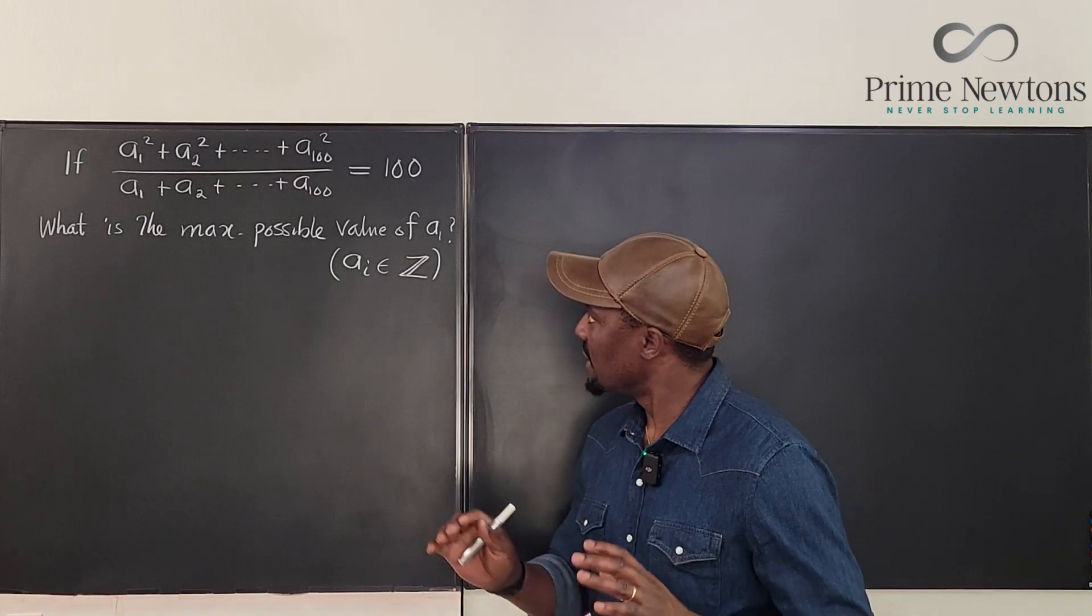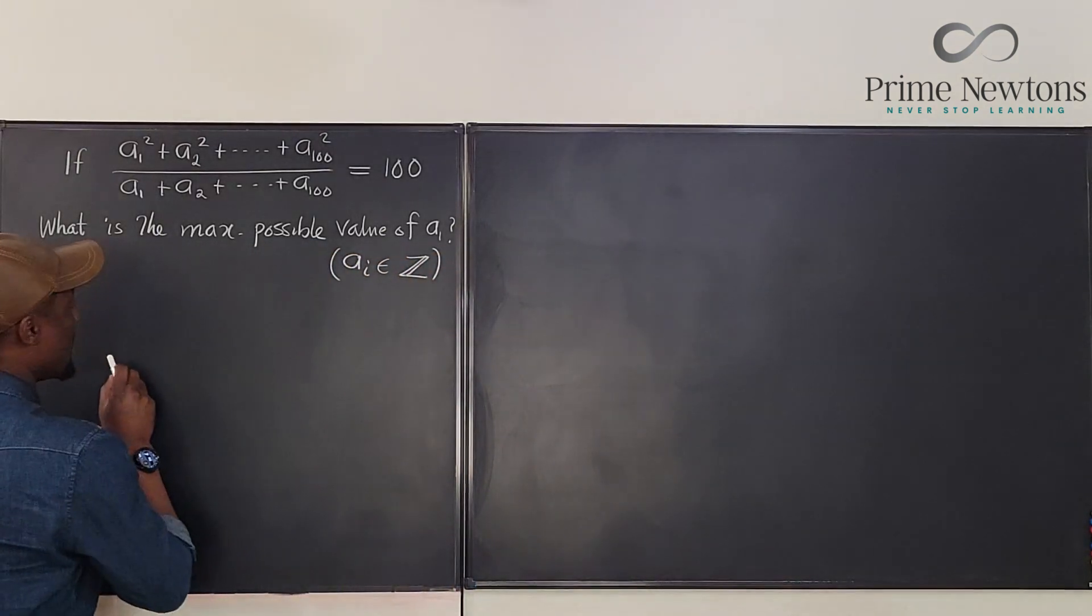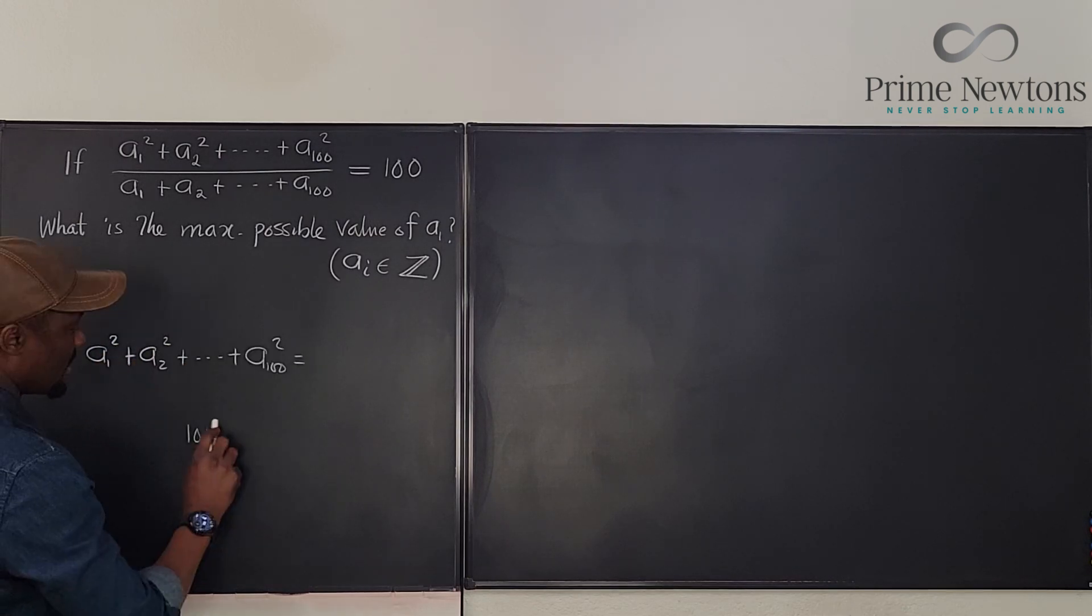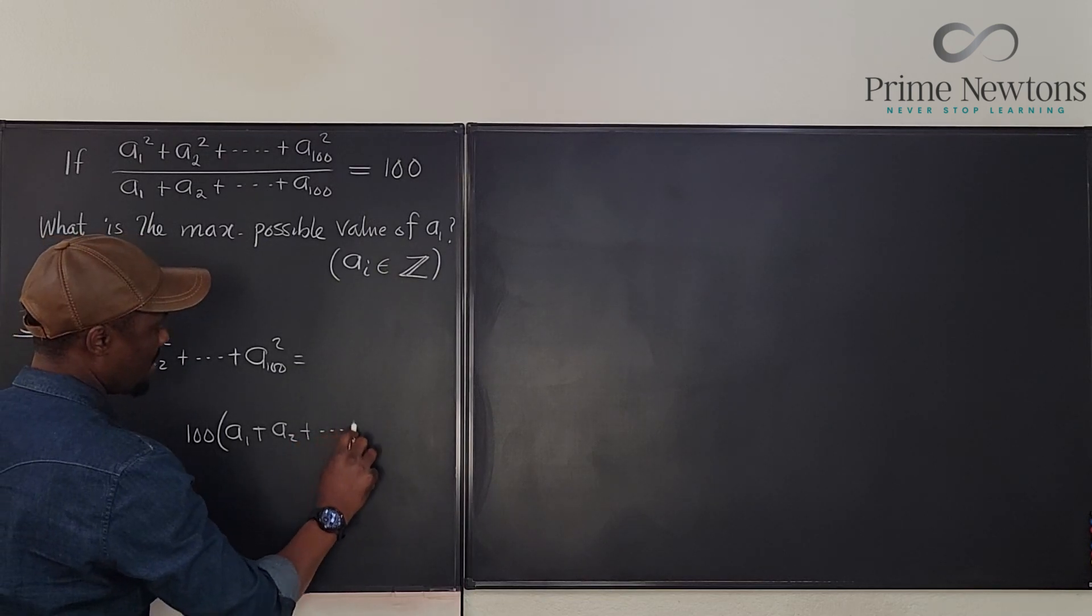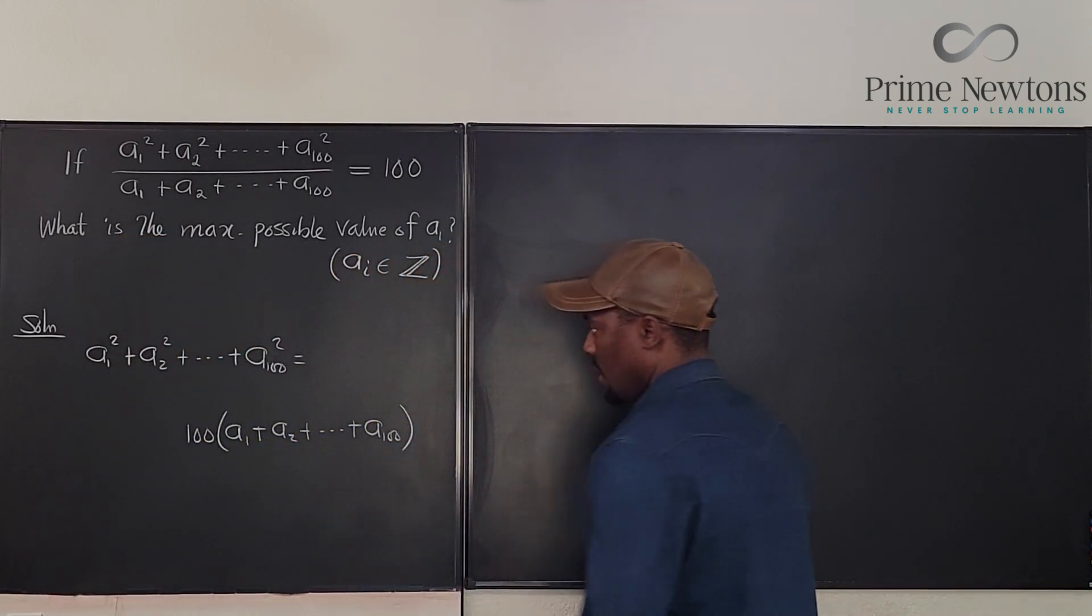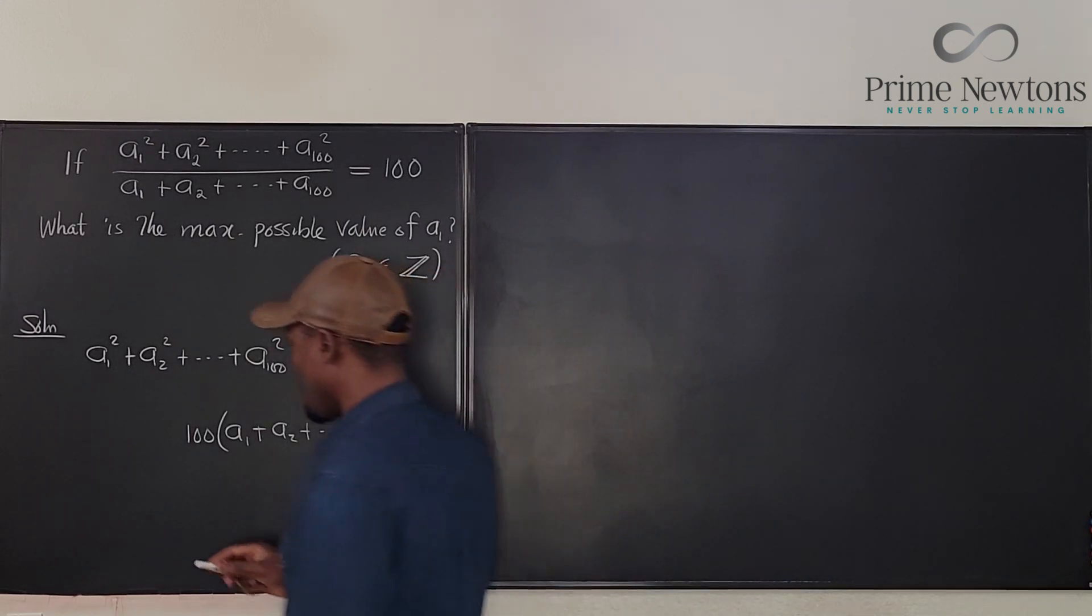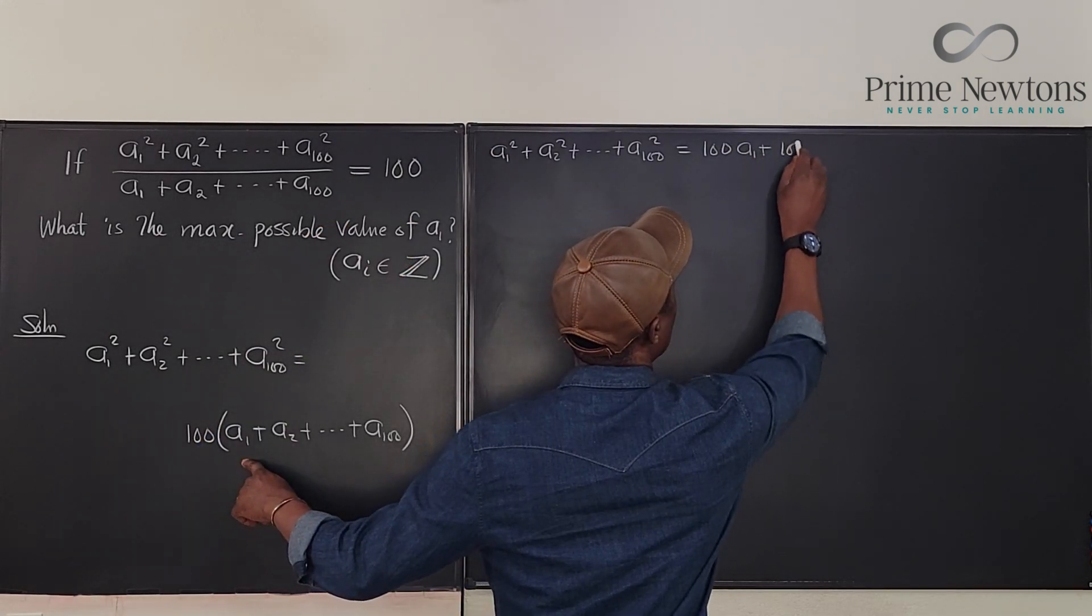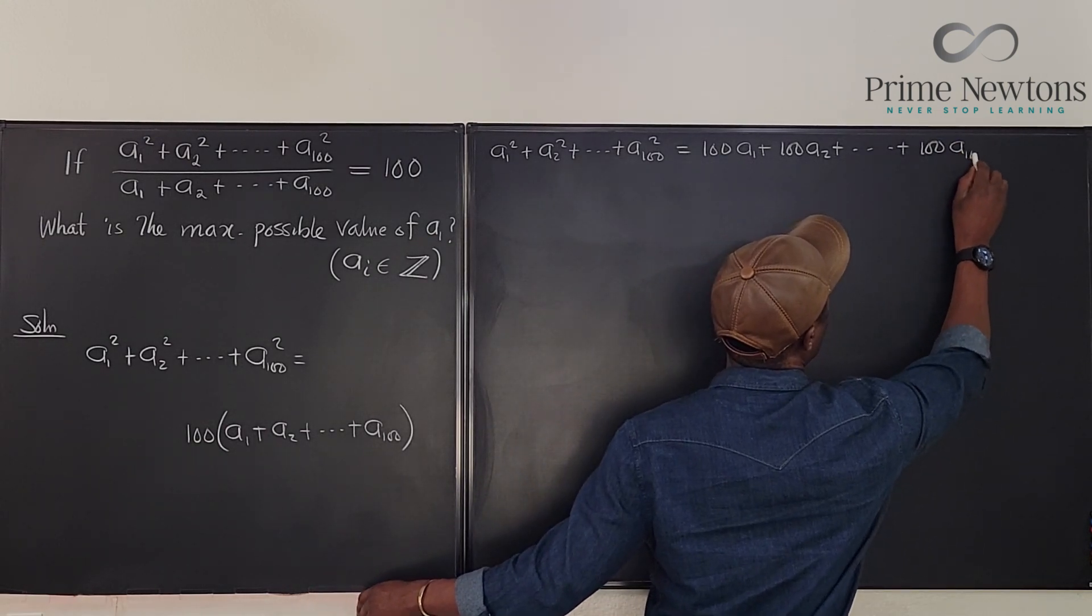I'm going to do it like a 9th or 10th grader. I'm going to multiply both sides by the denominator. So what I'm going to have would be A sub 1 squared plus times A sub 1 plus A sub 2 plus all the way to plus A sub 100. So now, if I distribute this, I'm going to have A sub 1 plus 100 A sub 2 plus all the way to 100 A sub 100.